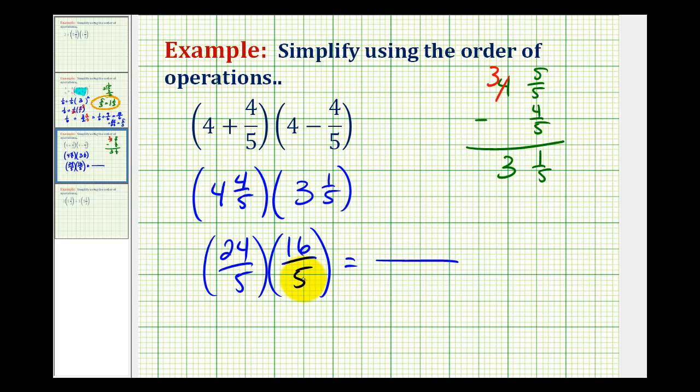So our denominator is going to be 5 times 5, which is 25. And the numerator is going to be 24 times 16, which is 384.